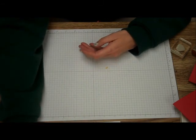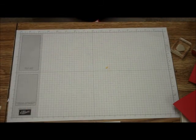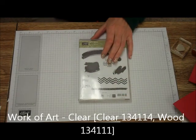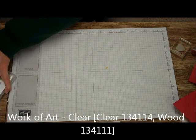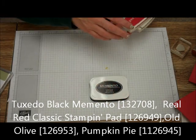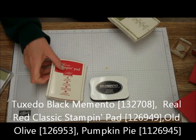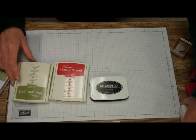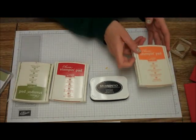What you're going to need is your work of art stamp set. For ink, you're going to use Memento Black, Real Red, Old Olive, and Pumpkin Pie.